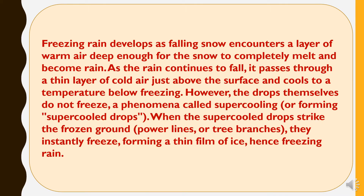Freezing rain develops as falling snow encounters a layer of warm air deep enough for the snow to completely melt and become rain. As the rain continues to fall, it passes through a thin layer of cold air just above the surface and cools to a temperature below freezing. However, the drops themselves do not freeze — a phenomenon called supercooling, forming supercooled drops. When supercooled drops strike frozen ground, power lines, or tree branches, they instantly freeze, forming a thin film of ice — hence freezing rain.